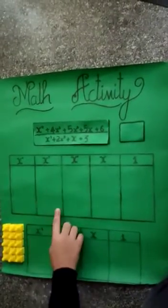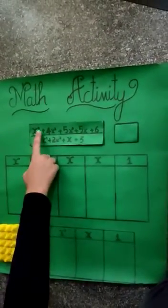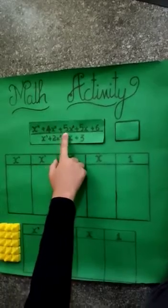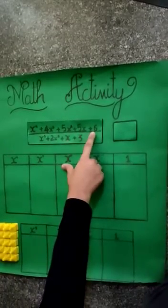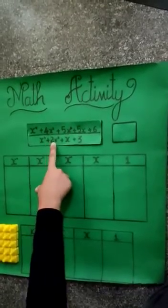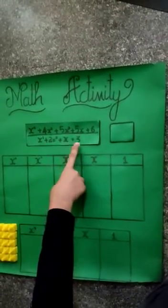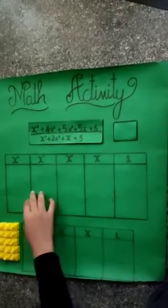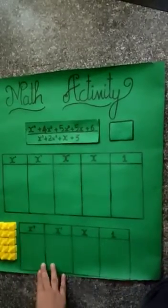Coming forward to the second question: x^4 + 4x^3 + 5x^2 + 5x + 6 divided by x^3 + 2x^2 + x + 3. As I have said before, this is the machine and this is the base.